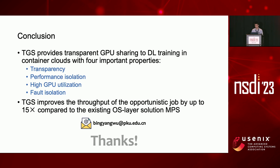To conclude, TGS is a system that provides transparent GPU sharing to DL training jobs in container clouds with four important properties: transparency, performance isolation, high GPU utilization, and fault isolation. Evaluation shows that TGS provides similar throughput as a state-of-the-art application layer solution and improves throughput of the opportunistic job by up to 15 times compared to the existing OS layer solution MPS. Thanks for listening.